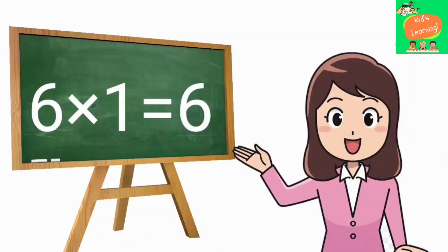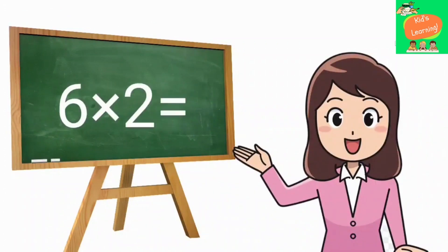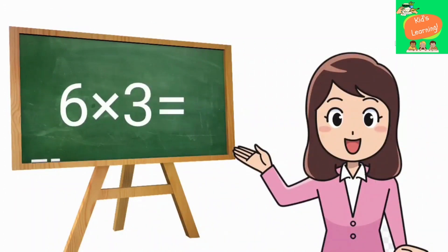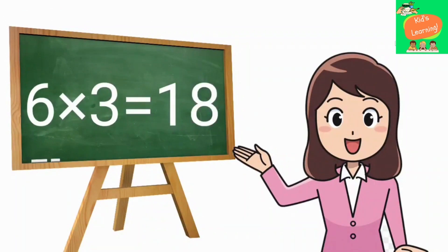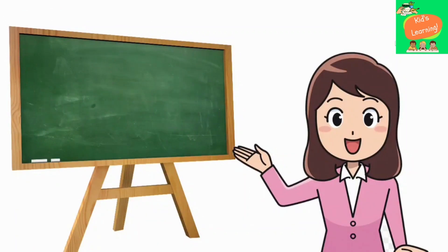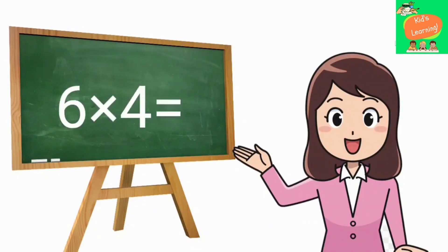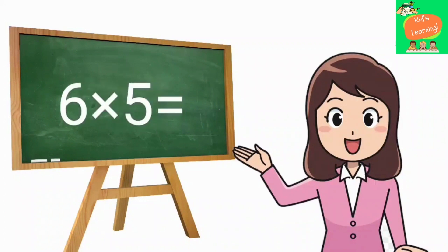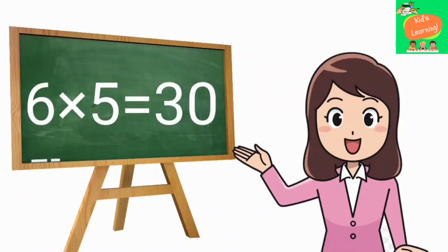6 1's are 6, 6 2's are 12, 6 3's are 18, 6 4's are 24, 6 5's are 30.